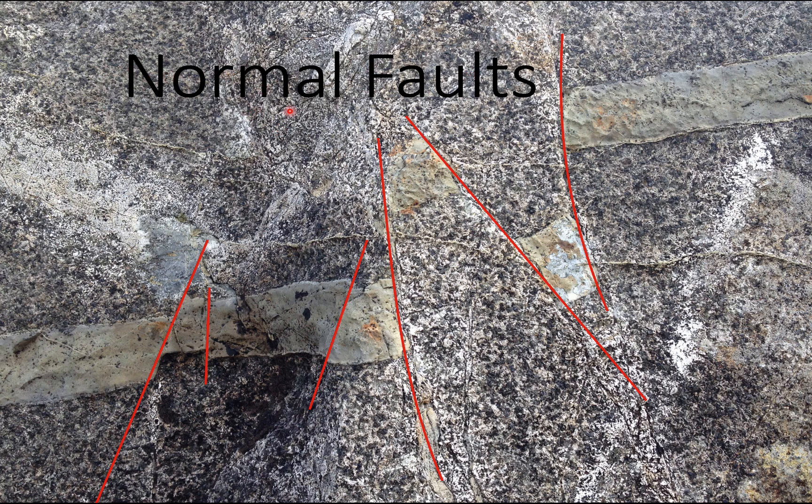They're often the easiest to see because the displacements are largely vertical and if you have any horizontal layer such as beds or this is a sill here then you end up with very clear displacements. So normal faults are the ones that you will be most easily identify in the field.